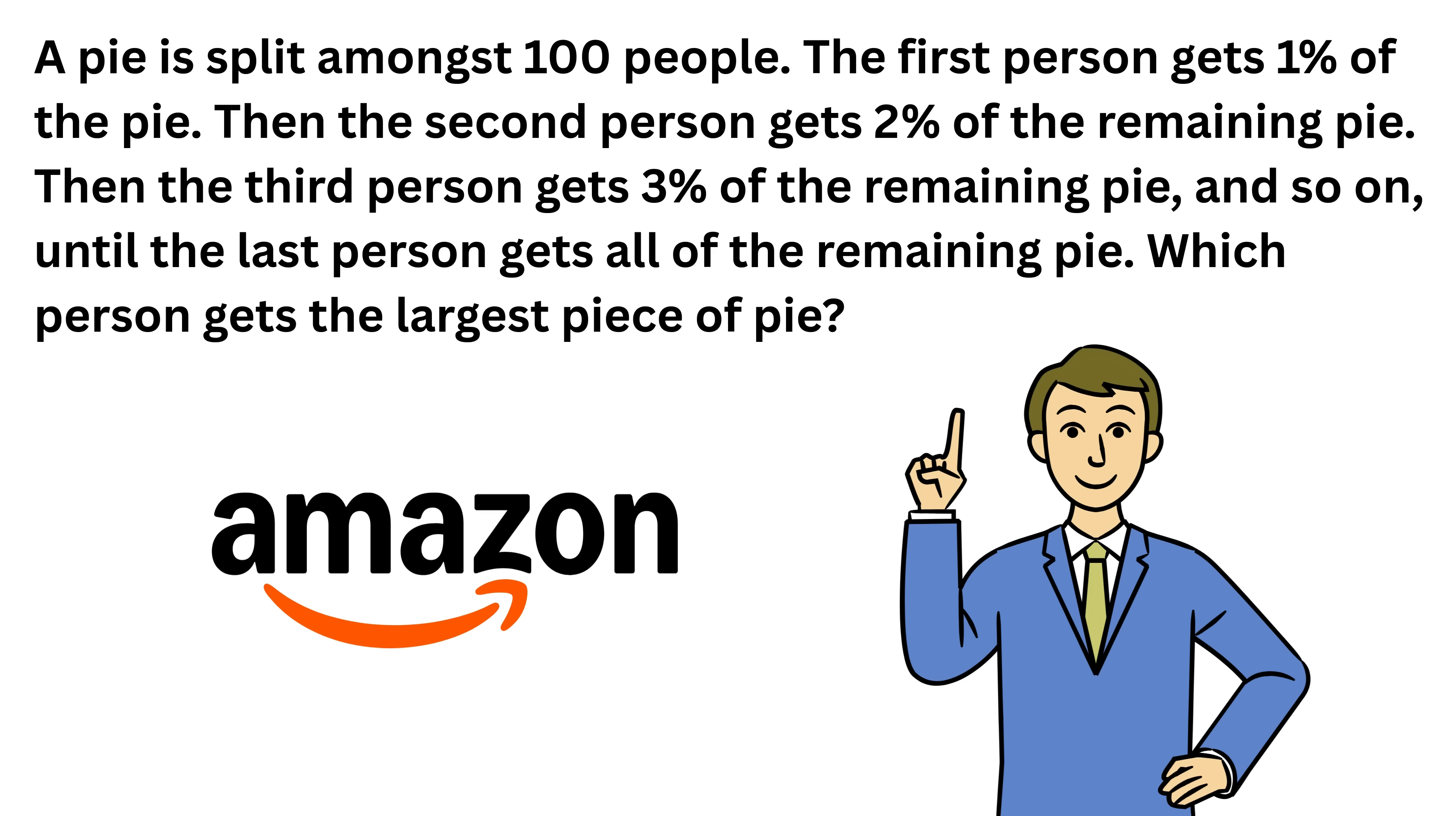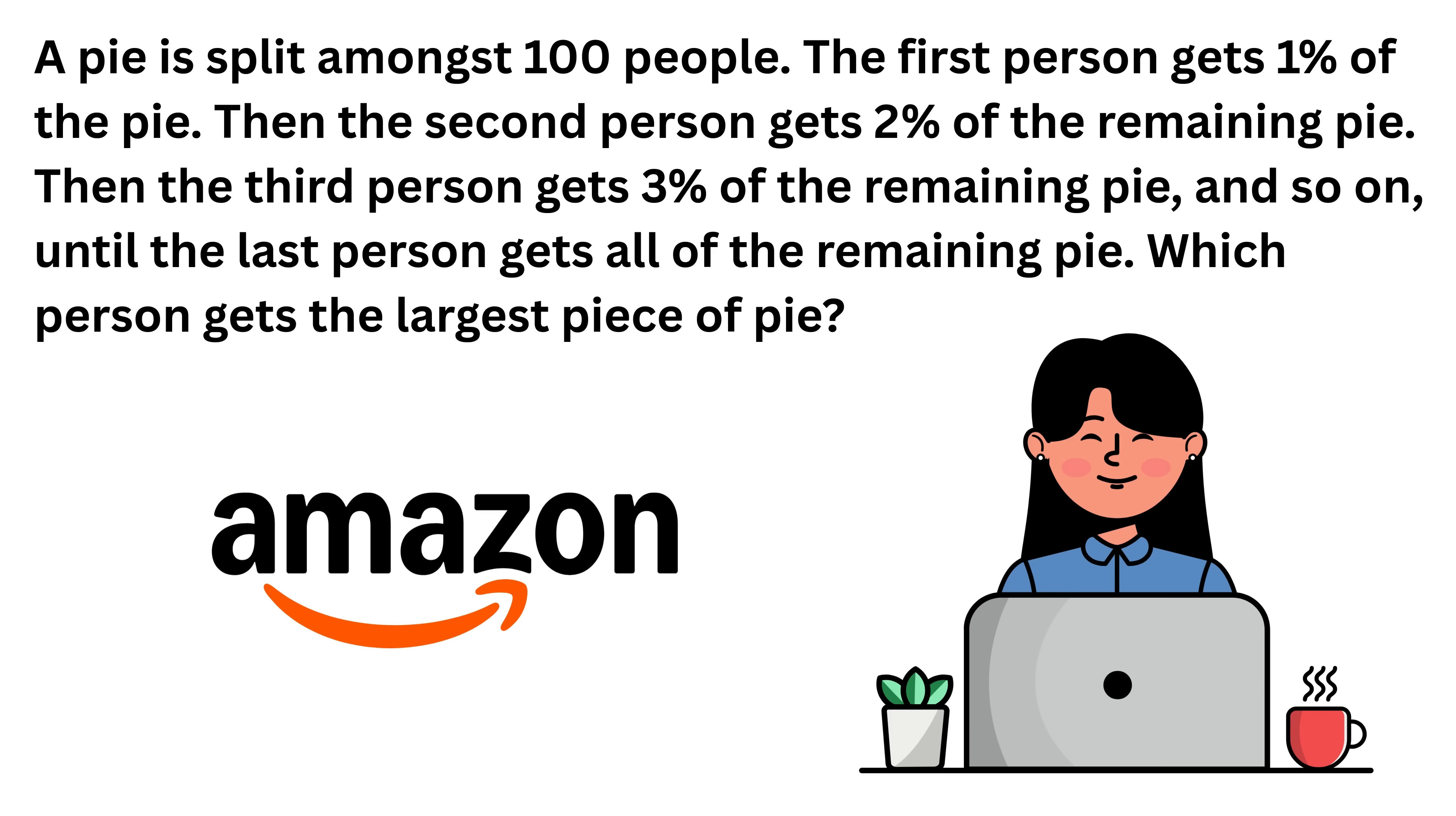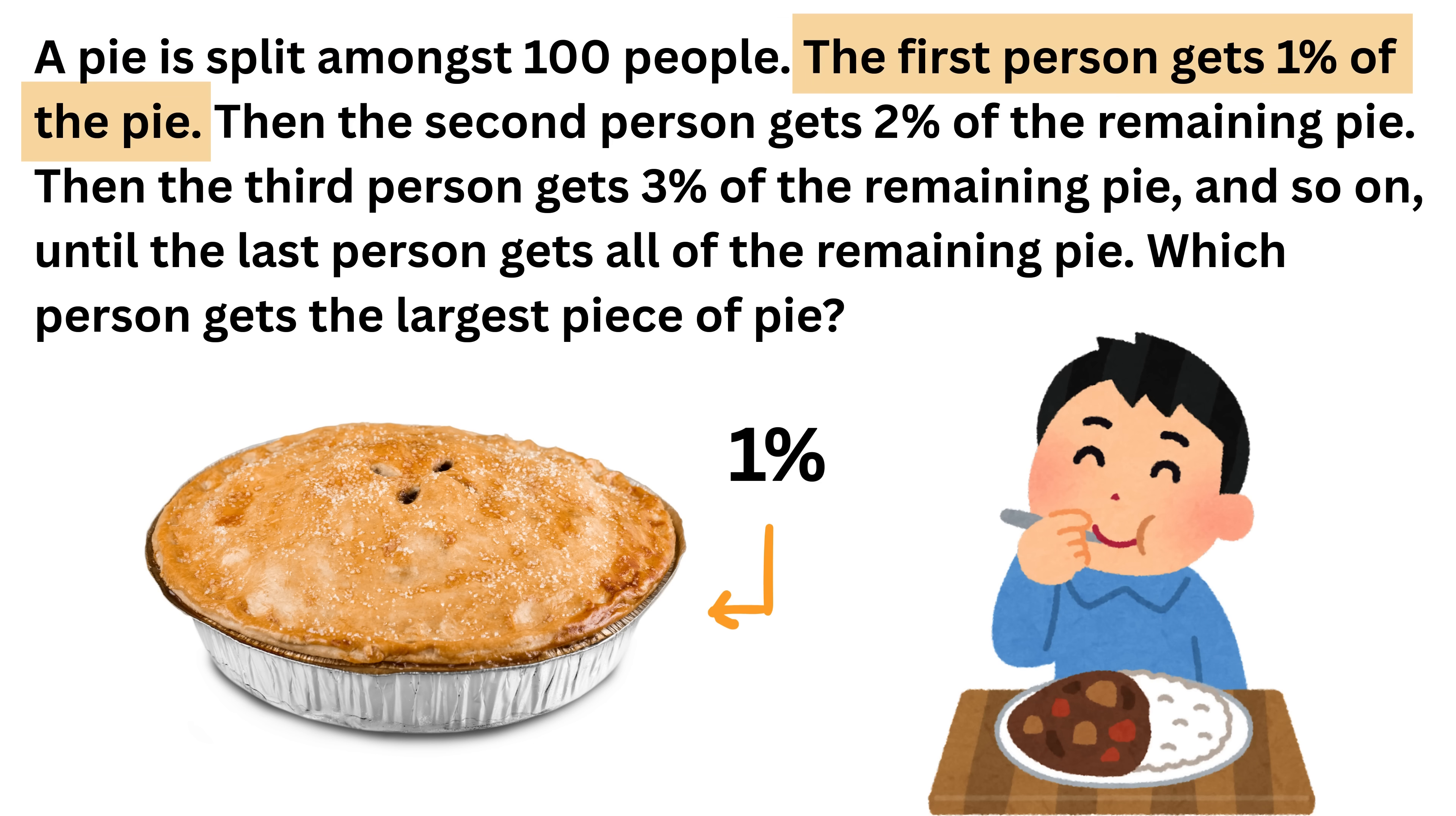Solve this and you might get selected in Amazon, not as a driver but as a software engineer. Imagine a pie so huge that it can easily feed 100 people. Now these people decide to follow a very unusual rule for sharing the pie. The first person takes 1% of the whole pie.